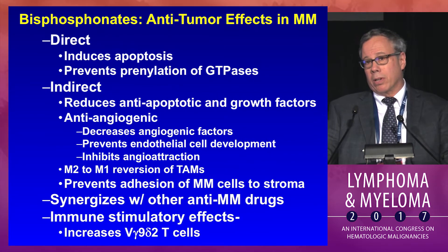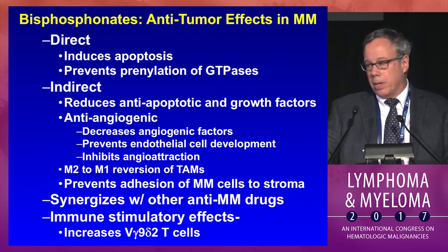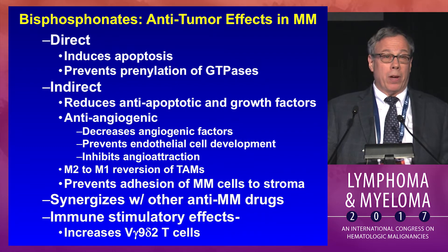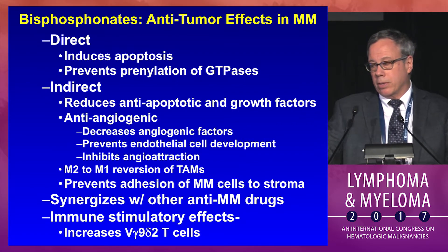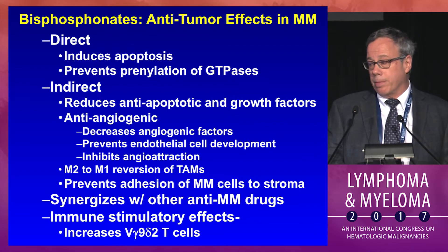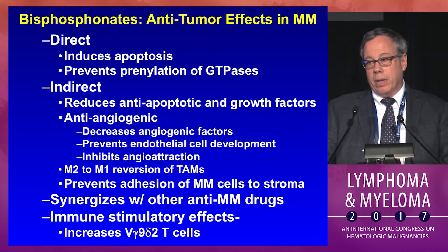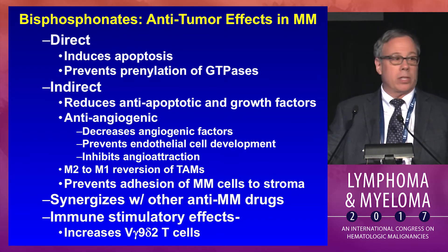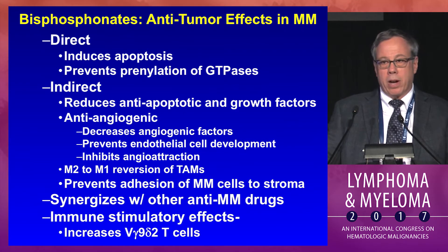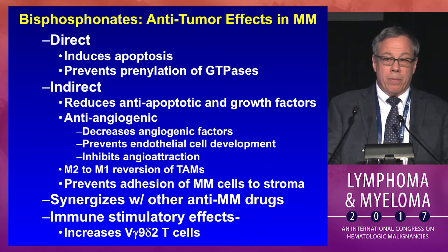Studies from our lab and many others suggest these drugs have profound anti-tumor effects: directly inducing apoptosis by partially preventing prenylation of GTPases, affecting RAS and similar proteins; indirect effects in reducing anti-apoptotic growth factors; anti-angiogenic effects including decreasing angiogenic factors and preventing endothelial cell development. Macrophages are polarized from M2 to M1 in the presence of bisphosphonates, affecting tumor-associated macrophages. There's a plethora of data suggesting synergism with other active drugs, and studies mostly from Germany showing effects on gamma-delta T cells with possible anti-tumor effects even outside of bone-involving cancers.